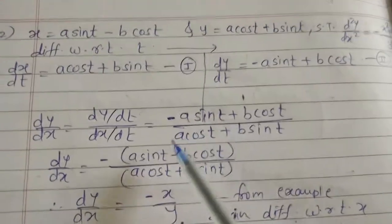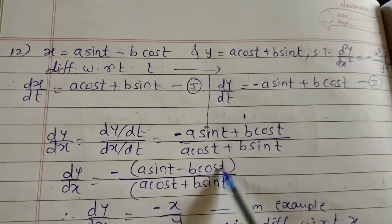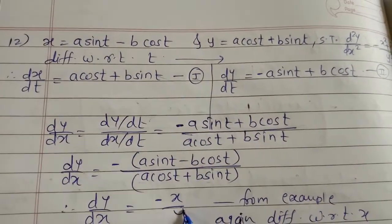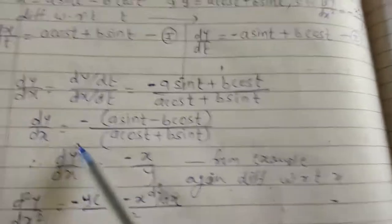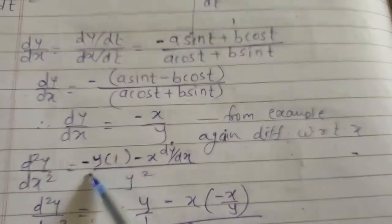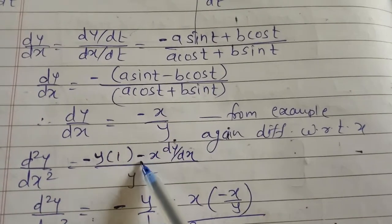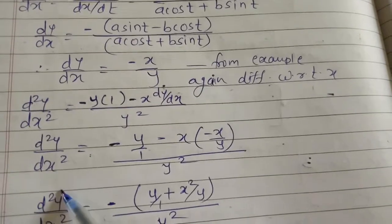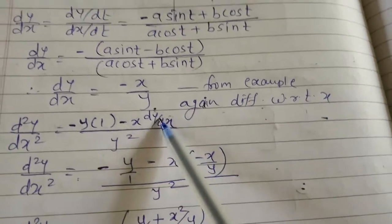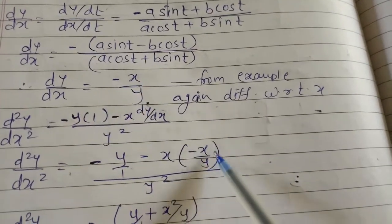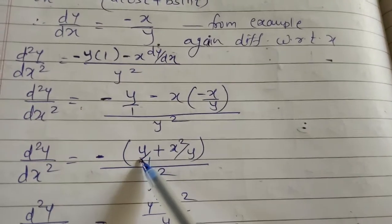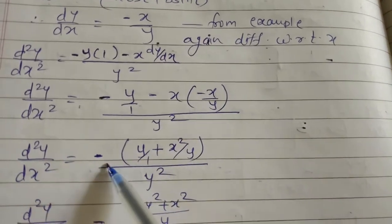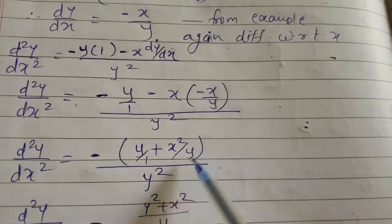Noting that dx/dt = a·cos(t) + b·sin(t) = y, and -(a·sin(t) - b·cos(t)) = -x: dy/dx = -x/y. Differentiating again: d²y/dx² = -[y·1 - x·(dy/dx)] / y². Substituting dy/dx = -x/y: d²y/dx² = -[y - x·(-x/y)] / y².